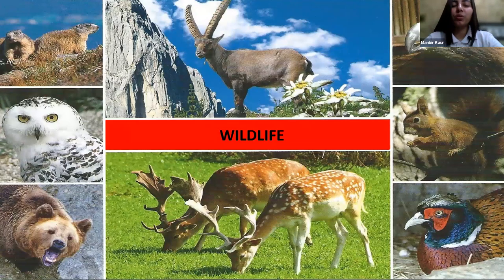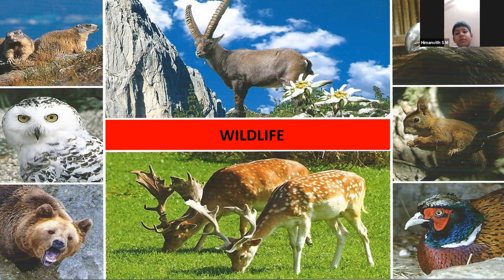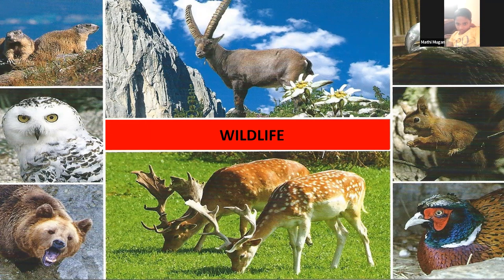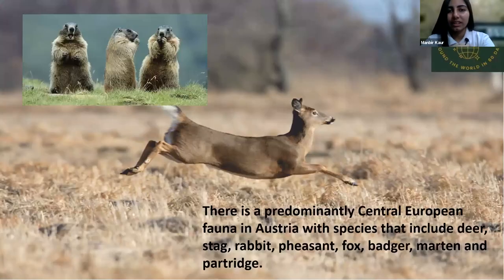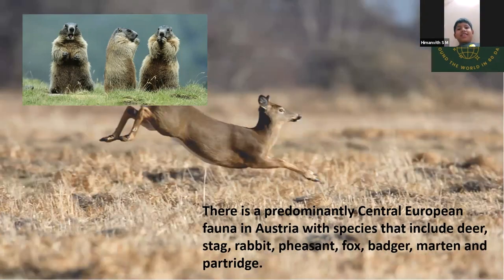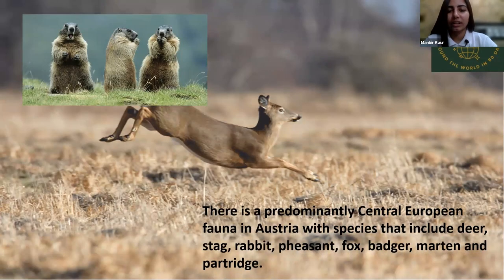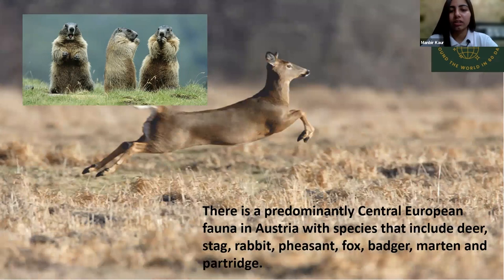Now we'll talk about the wildlife of Austria. Can you tell me a few animals you can see on the screen? Yes, eagle — the Black Eagle, which as I mentioned is the national animal of this country. Austria also has a wide range of wildlife including deer, stag, and rabbit, among many other animals.